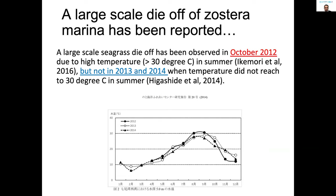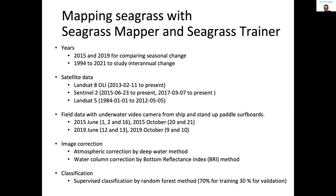If the temperature exceeds 30 degrees Celsius in summer, a lot of them cannot survive. This figure is a comparison of 2012 to 2014. Only in 2012 did the surface temperature exceed 30 degrees Celsius, and it caused a massive seagrass die-off. This is background information for the NOWPAP Sea, and the case study I am about to present is a comparison of 2015 and 2019.